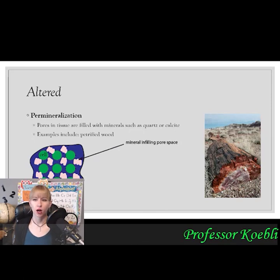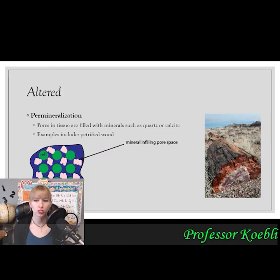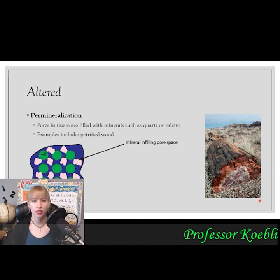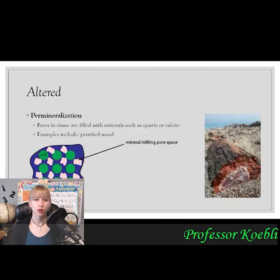Altered fossils mean that parts have been replaced by another material. Permineralization is the first altered type — water gets into the spaces between cell pores and is replaced with quartz or calcite as the water evaporates, leaving behind mineral growths, similar to how a geode forms. This fills spaces down to the microscopic level, turning an organism into rock while still leaving original materials present — like petrified wood.